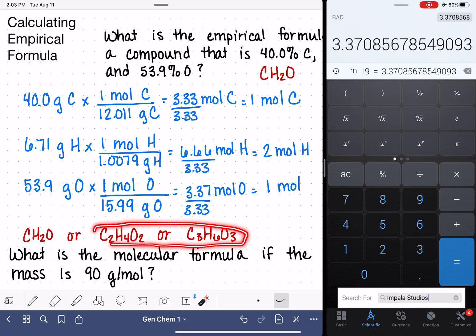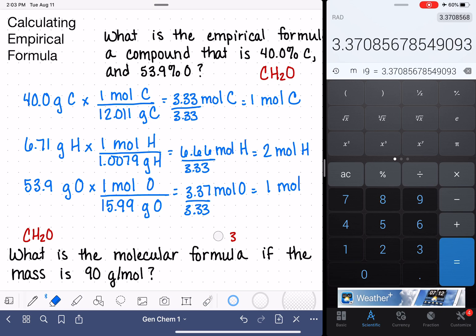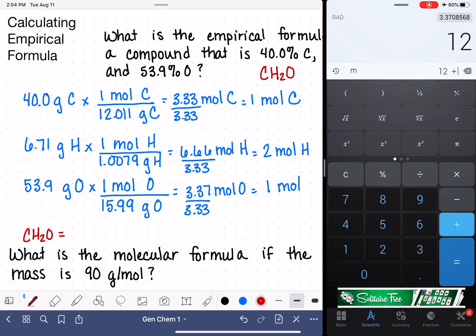Usually the fastest way to do this type of calculation is to calculate the molar mass of the empirical formula. So that's going to be 12 for the carbon plus approximately 2 for the two hydrogens plus 16 for the oxygen.